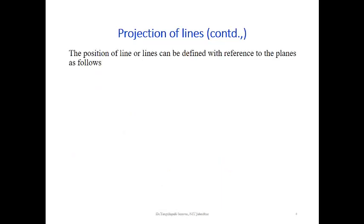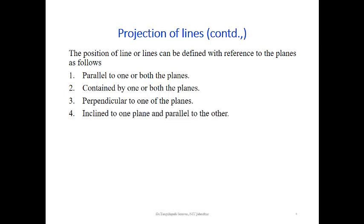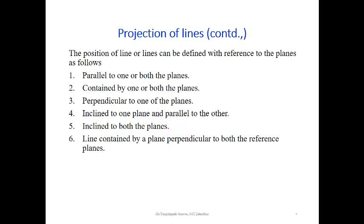To describe the location of a straight line with reference to the horizontal plane, it is defined with reference to two principal planes. The classifications are: line parallel to one or both planes; line contained by one or both planes; line perpendicular to one of the planes; line inclined to one plane and parallel to the other; line inclined to both horizontal and vertical planes; and line contained by a plane perpendicular to both reference planes, i.e., contained by an auxiliary vertical plane.